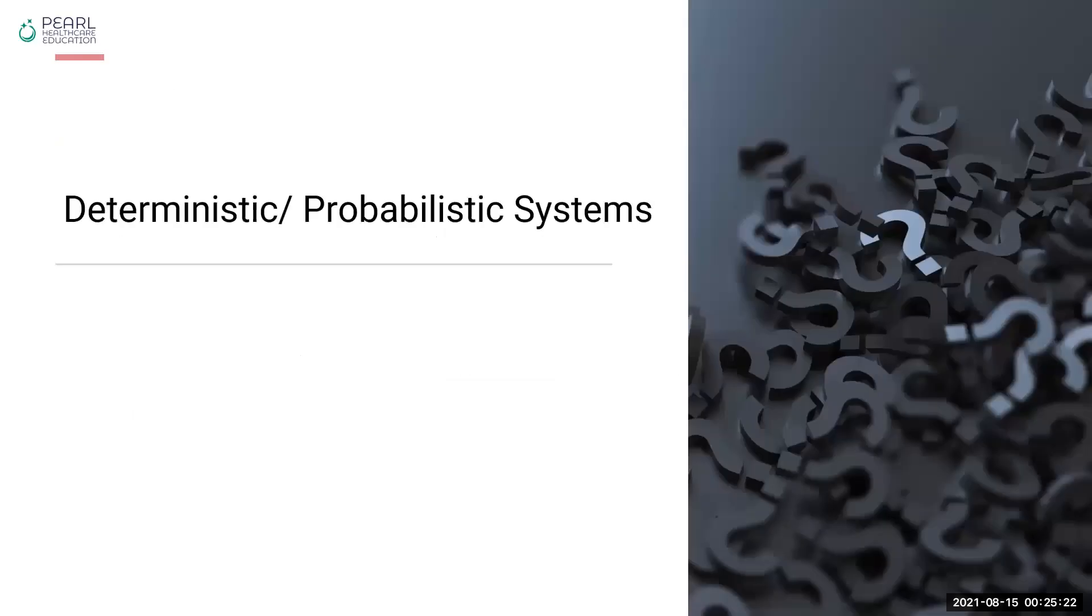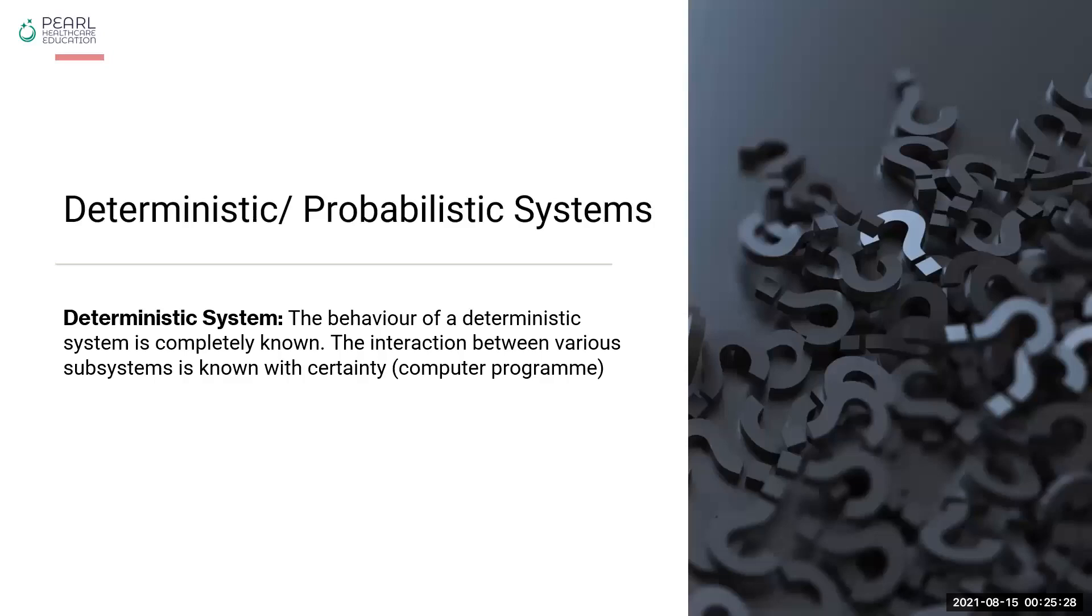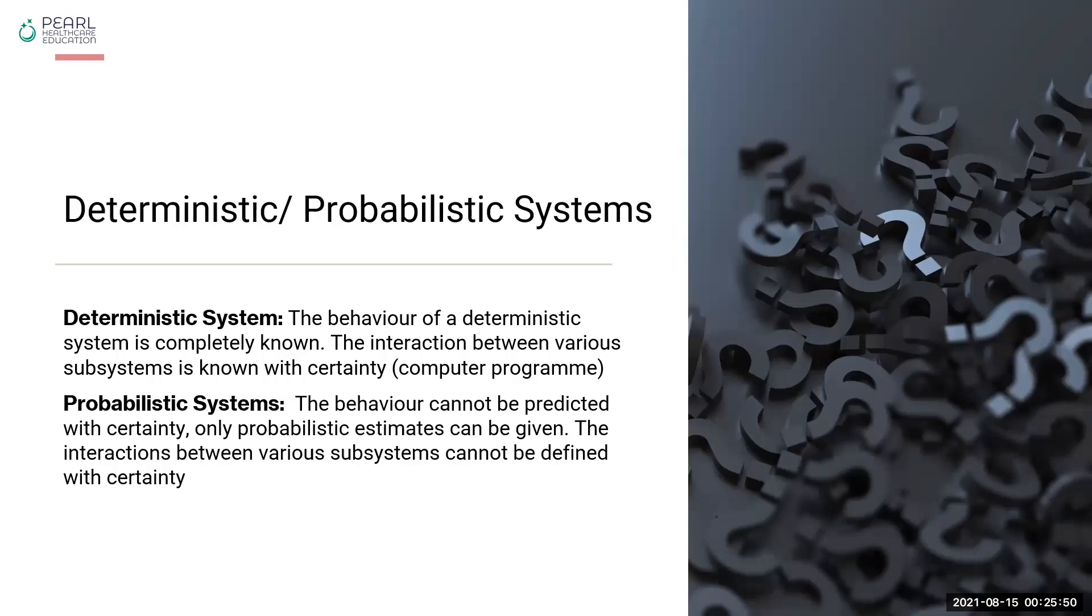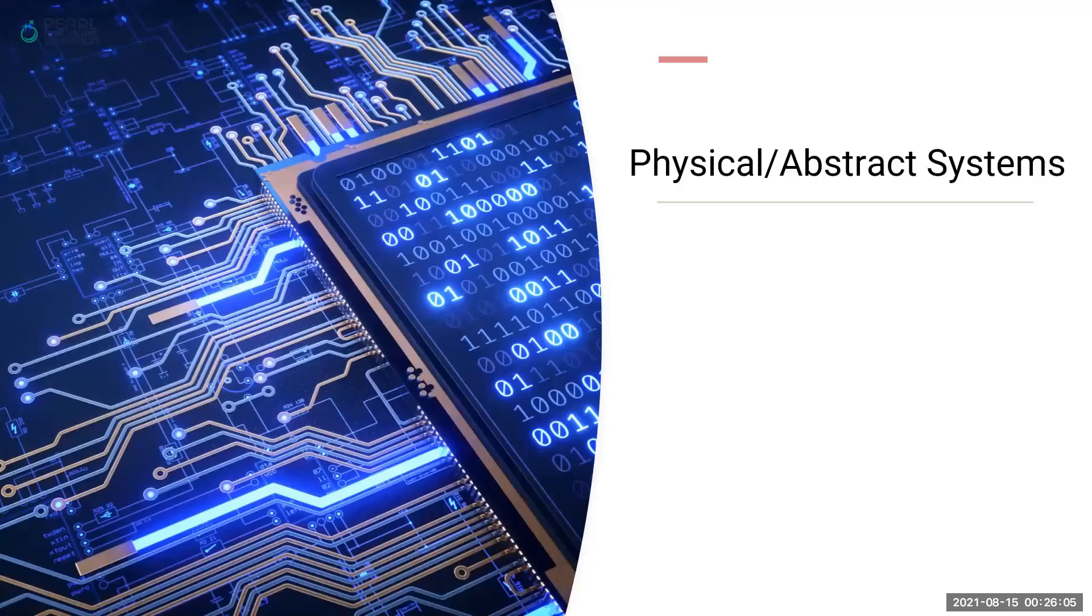Systems could be deterministic or probabilistic. Deterministic systems are those where the behavior is completely known, you know what is going to happen, you know how different subsystems are working together, for example human body and its various subsystems. Whereas probabilistic system means the behavior cannot be predicted with certainty. We don't really know what's going to happen. The interaction between various subsystems cannot always be defined with certainty.